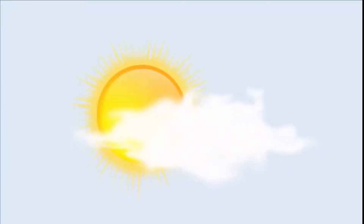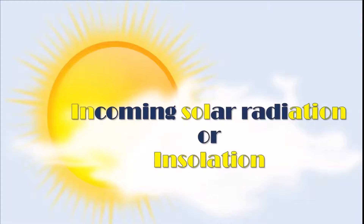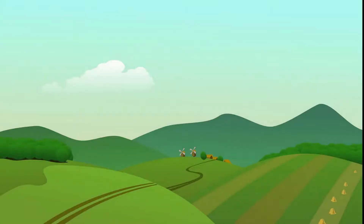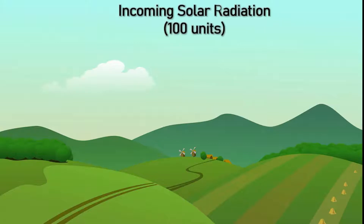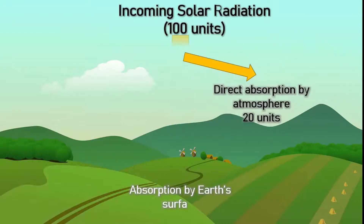Let us see how incoming solar radiation, or insolation, is distributed in the atmosphere and earth's surface. We will suppose that the total incoming solar radiation received by the atmosphere is 100 units. Out of which, 20 units are directly absorbed in the atmosphere through various greenhouse gases like carbon dioxide, ozone and water vapor, and 50 units are absorbed by earth's surface.